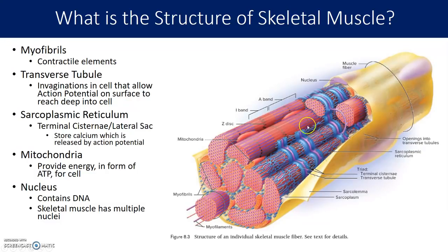You also have multiple nuclei located under the cell membrane — the sarcolemma is the cell membrane. Muscle fibers are unique in that they have multiple nuclei, not just one. Most cells have a single nucleus, but muscles can be very big and long, so they have multiple nuclei to be in charge of different regions.